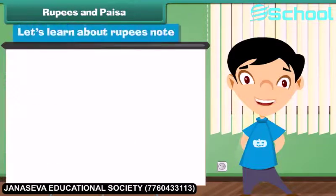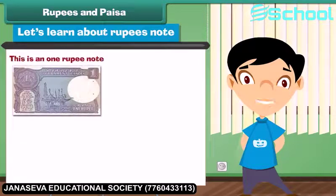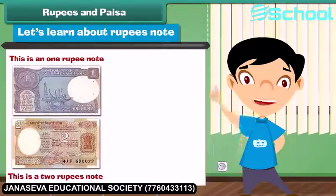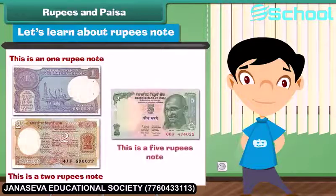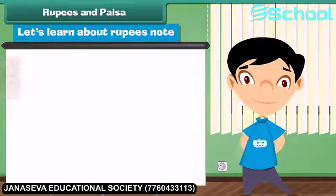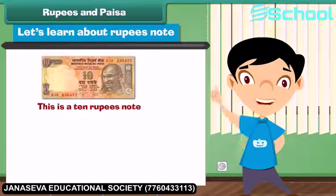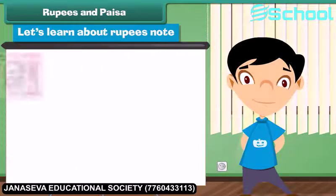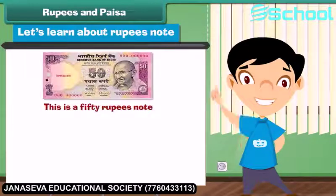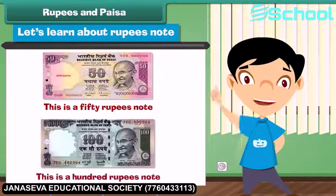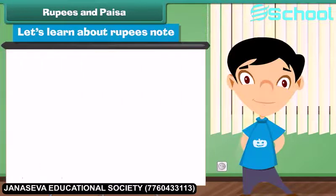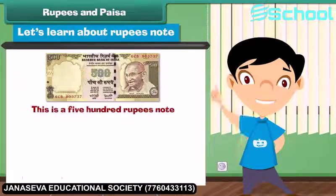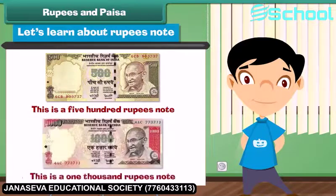Let's learn about rupee notes. This is a 1 rupee note. This is a 2 rupees note. This is a 5 rupees note. This is a 10 rupees note. This is a 20 rupees note. This is a 100 rupees note. This is a 500 rupees note. And this is a 1,000 rupees note.